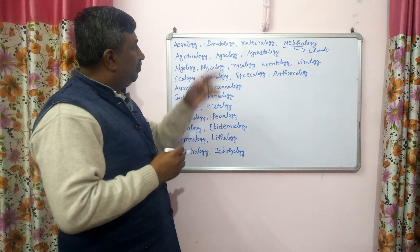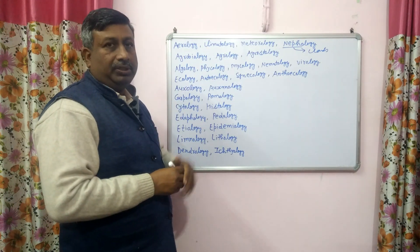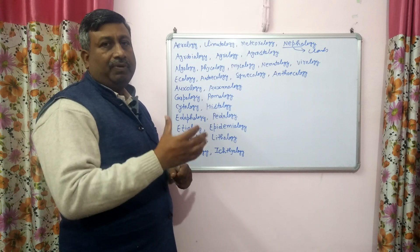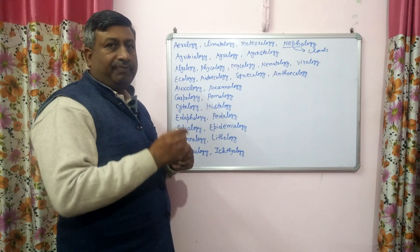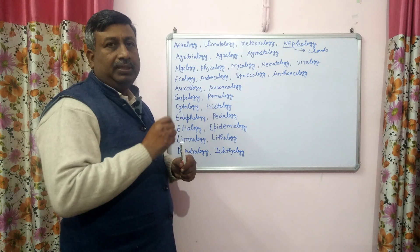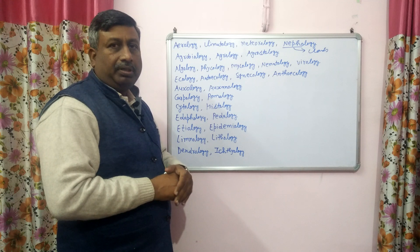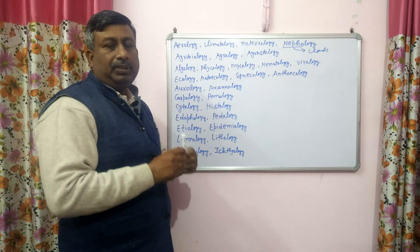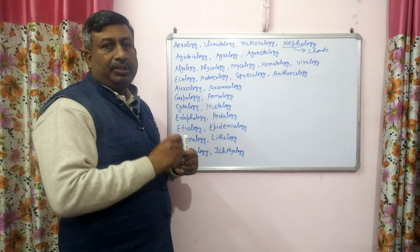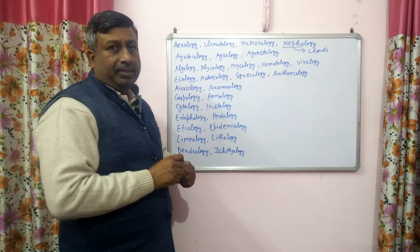And if the prefix word is 'agro,' for example agroclimatology, it means it is the study of the influence of climate on agriculture. If the word has the prefix 'agro,' it means the study is related with agriculture. Similarly, agrometeorology means it is the study of the effect of weather conditions on agriculture, or the study of the relationship between weather conditions and agriculture.